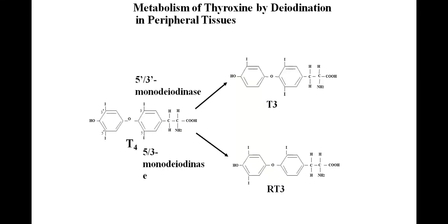T4 is more in circulation, but T3 is the active form. In the periphery, T4 is converted into T3 because T3 is more active. This conversion is helped by deiodinases. When 5'3' monodeiodinase acts on T4, it is converted into T3. When 5'3' monodeiodinase acts, it is converted into reverse T3, or RT3.